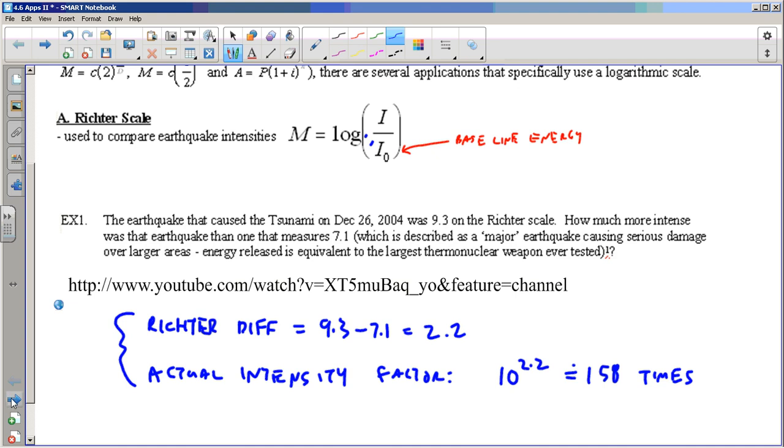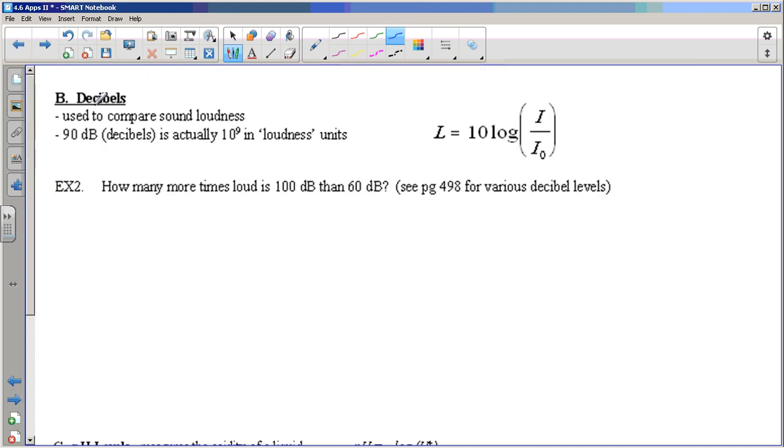What's the next example? I think it's decibels. So decibels are used to compare sound loudness. We're familiar with decibels, hopefully. It's a logarithmic scale. So when we say something is 90 decibels and something is 100 decibels, the 10 units that it's bigger, 10 decibels louder, isn't just 10 decibels louder. It's a factor.